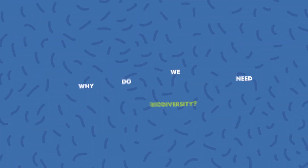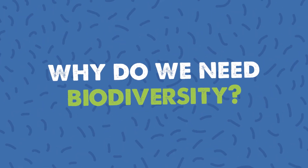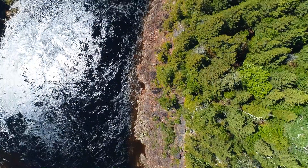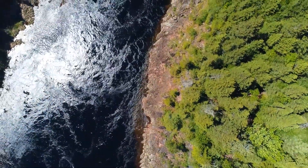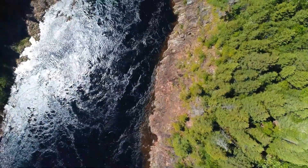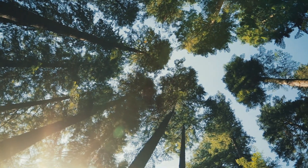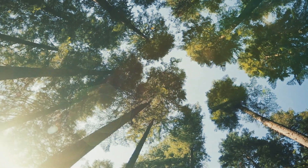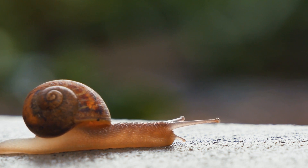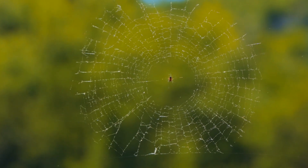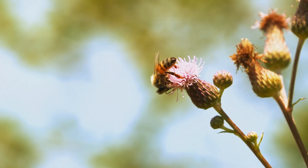We need biodiversity for lots of reasons. Biodiversity is about the variety of different living things. Having lots of diversity among plants, animals, and all living things around us is essential in keeping different ecosystems healthy. Plants absorb carbon dioxide and release oxygen from their leaves, which humans and other animals need to breathe. An invertebrate is an animal without a backbone, like a snail, worm, spider, or woodlouse.